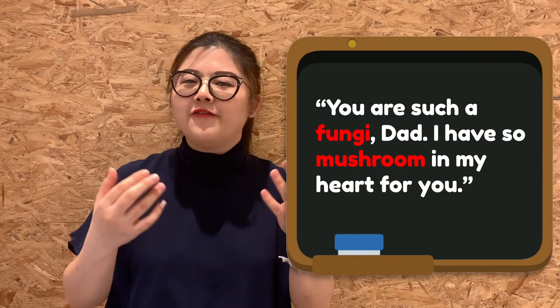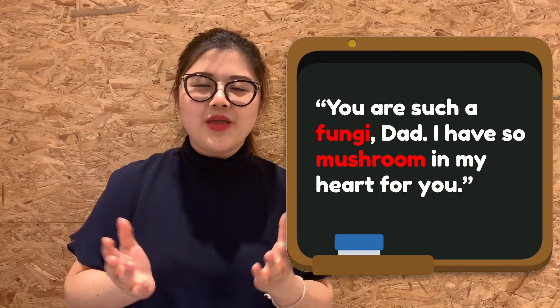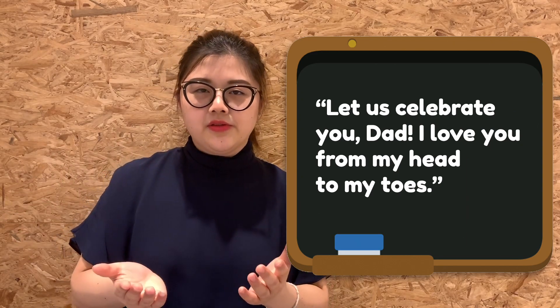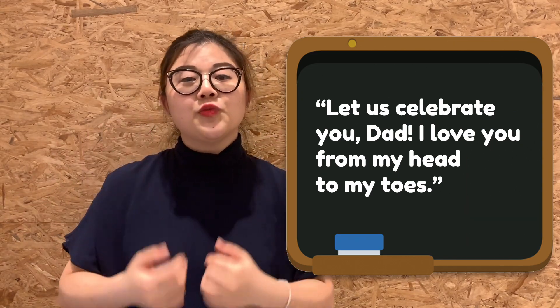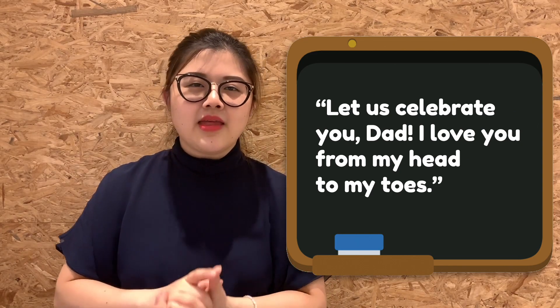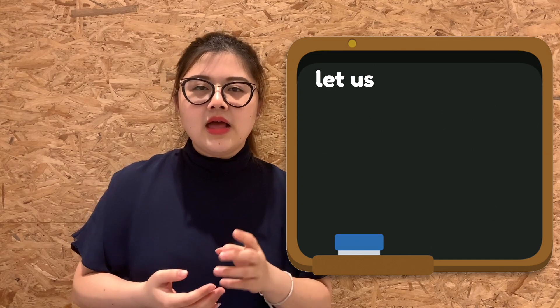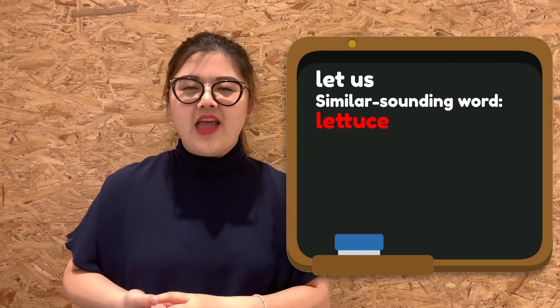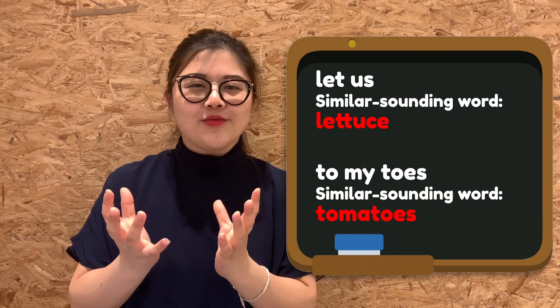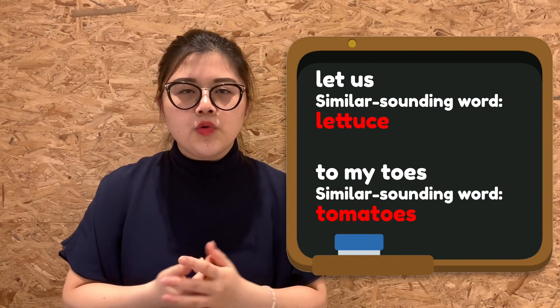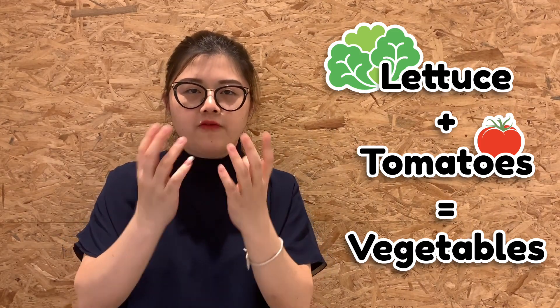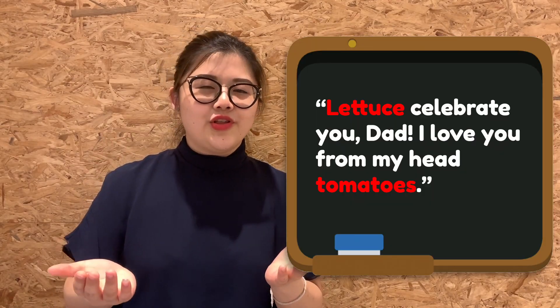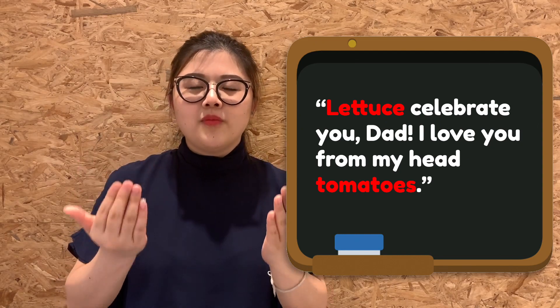So my final sentence would look like this: 'You are such a fungi dad. I have so much mushroom in my heart for you.' Another example: 'Let us celebrate you today — I love you from my head to my toes.' In these two lines, I could replace 'let us' with 'lettuce' (as in the vegetable) and 'to my toes' with 'tomatoes.' I chose these two because lettuce and tomatoes also fall under the same category. The final sentences would sound like: 'Lettuce celebrate you, dad. I love you from my head to my tomatoes!'